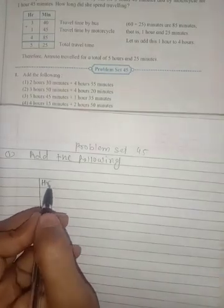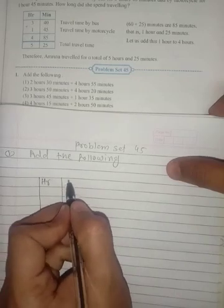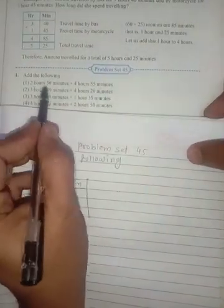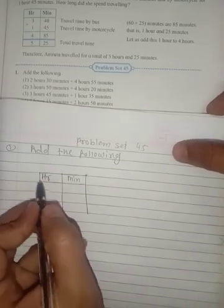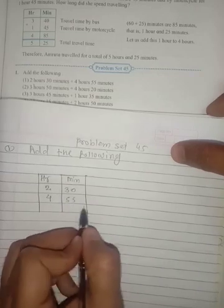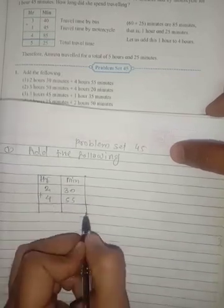So it is 2 hours and 30 minutes, so we are writing here 2 hours and 30 minutes right here. It is 4 hours, 4 hours right here, 55 minutes. Okay, now let's add this.